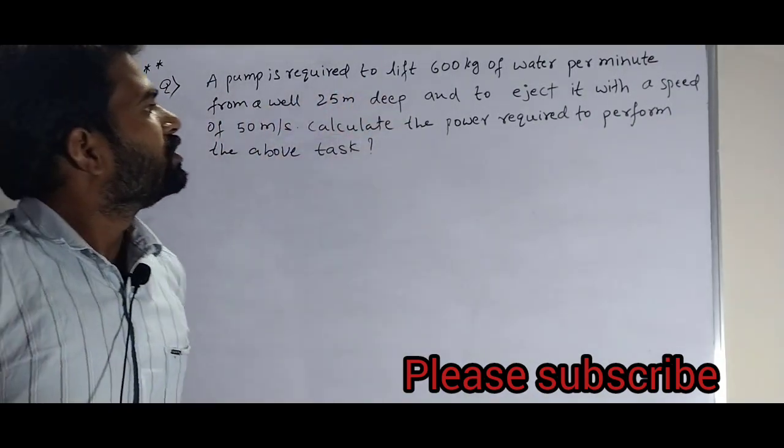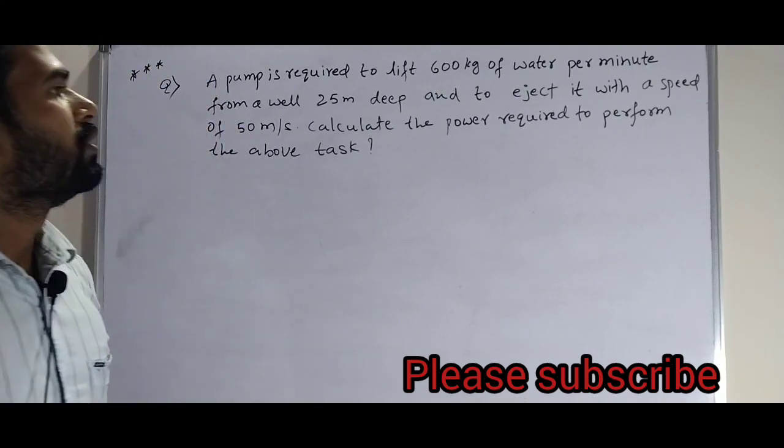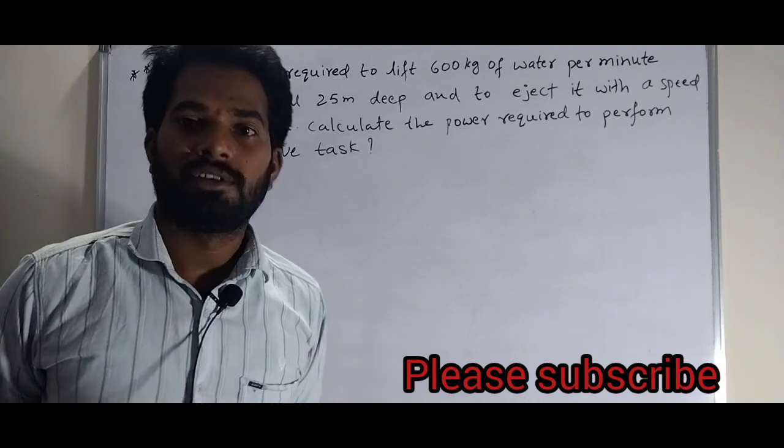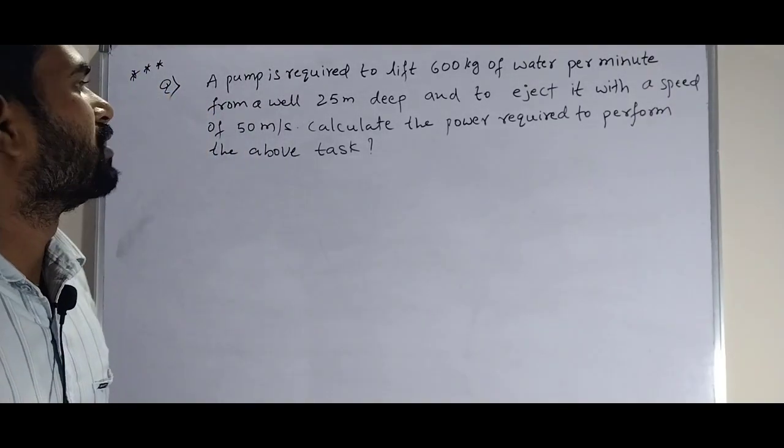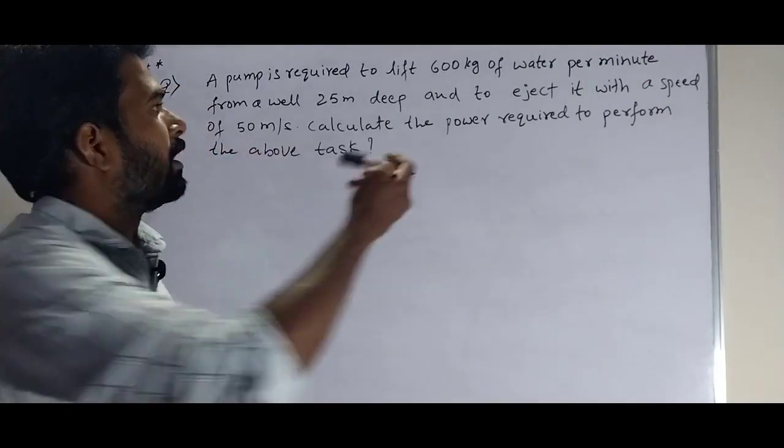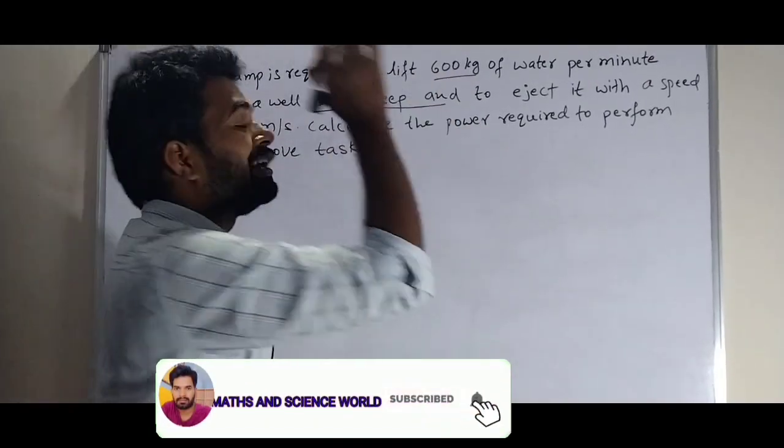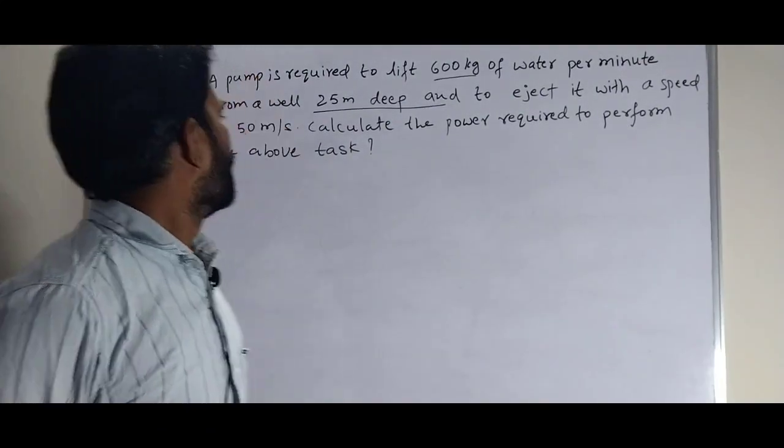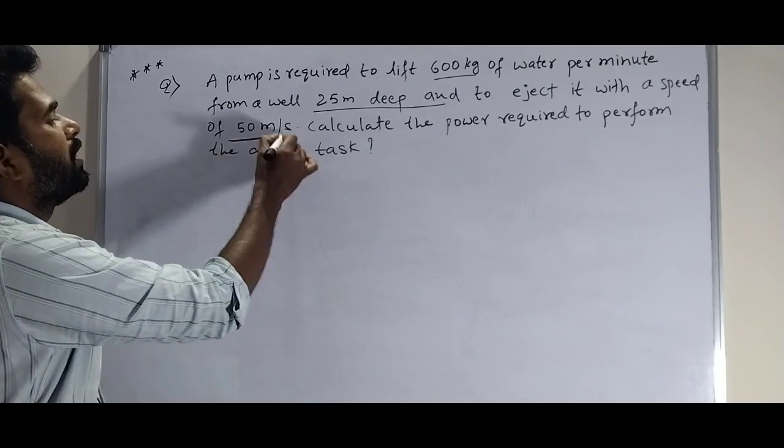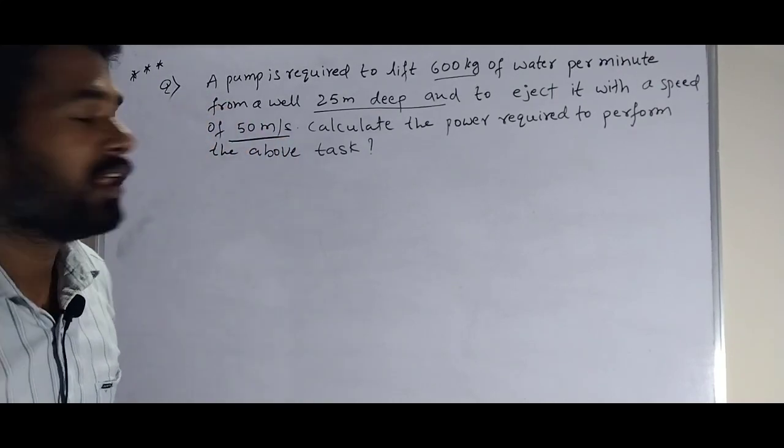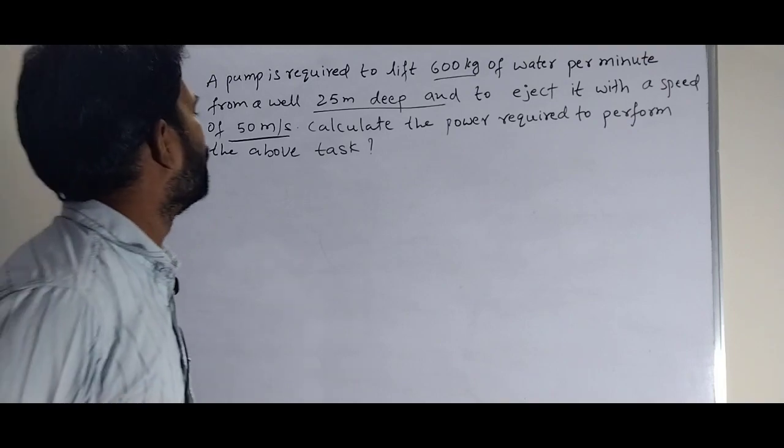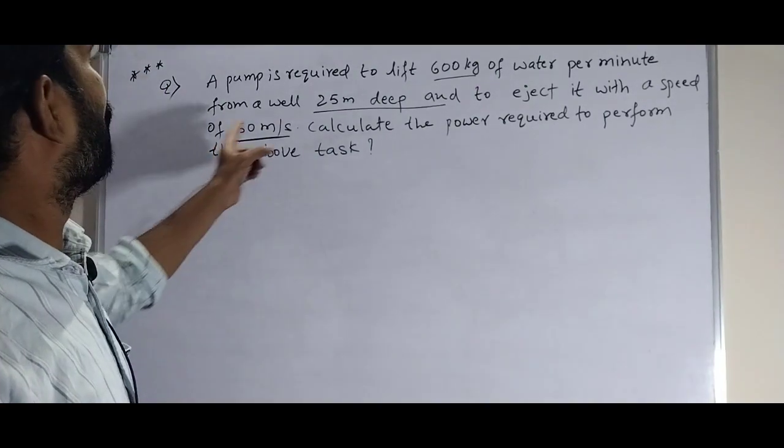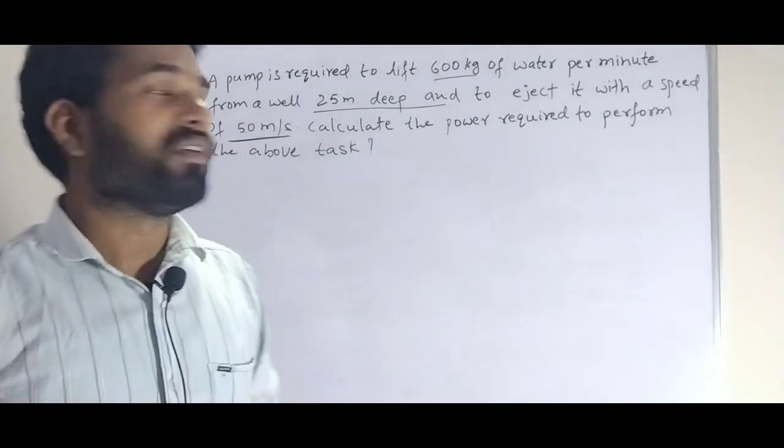A pump is required to lift 600 kg of water per minute. What is the mass of water? 600 kg. The speed is 50 meter per second. Calculate the power required to perform the above task. We need to find out the pump power.